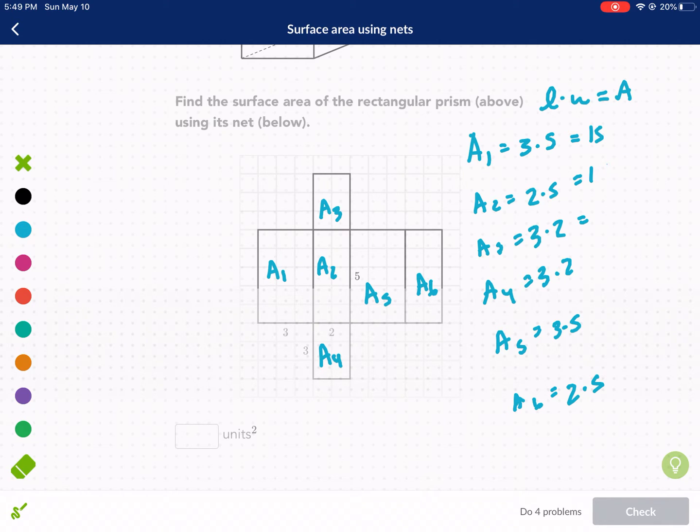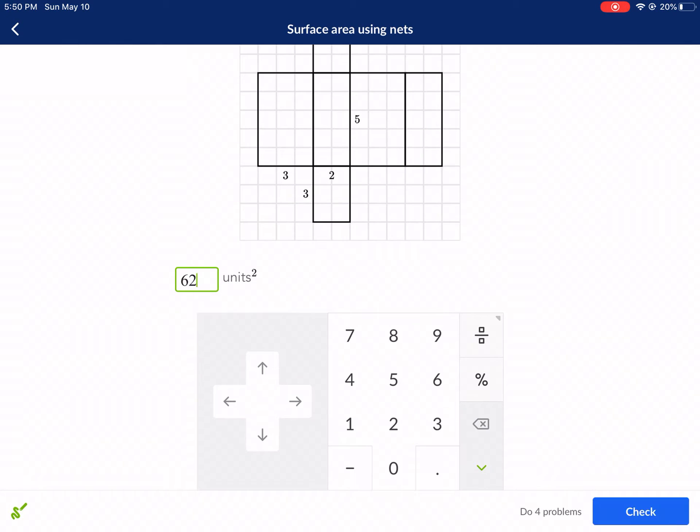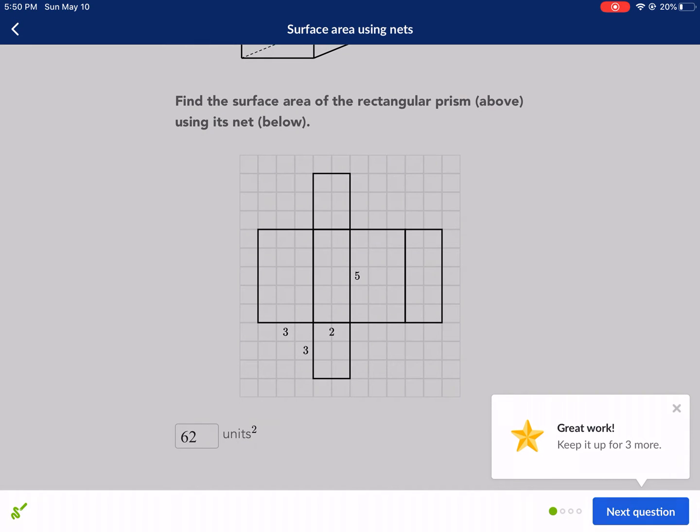My multiplication is a little off here. 2 times 5 is 10, 6, 6, 15, and then 10. So now we just need to add up all these numbers. So I have 15. Hold on a second. 15 times 2, 10 times 2 is 20, plus 6 times 2 is 12. So I have 62 units squared for my answer. All right, next question.